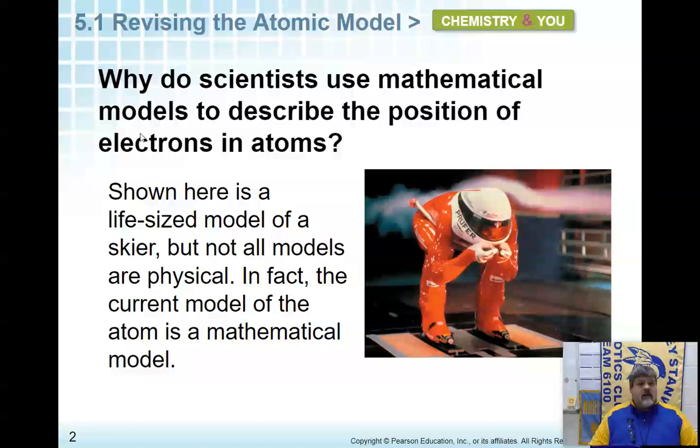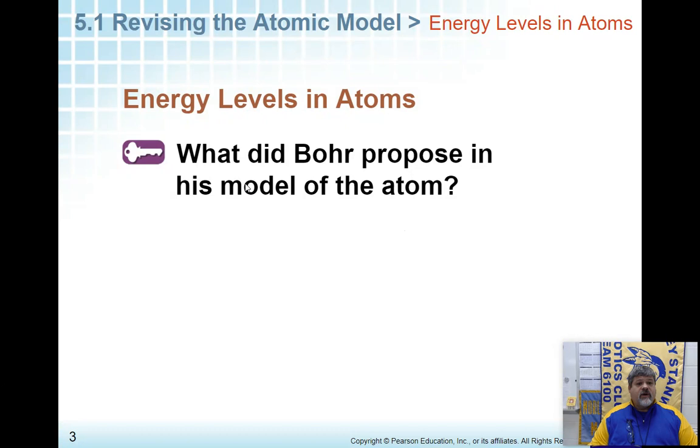Why do scientists use mathematical models to describe the position of electrons? Well, they use models because, first of all, they can't see individual electrons. They can only tell you approximately where they're at. But we can use models to represent something so we can see how it reacts. Mathematical models, just like physical models, are still models.